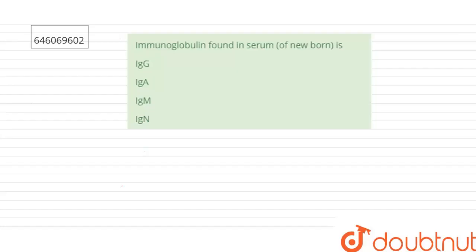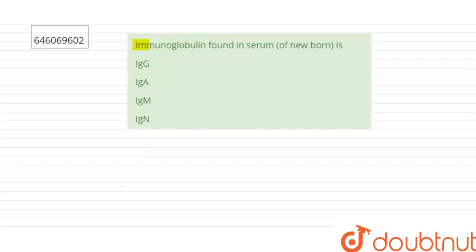The question says that the immunoglobulin found in the serum of a newborn is: immunoglobulin G, immunoglobulin A, immunoglobulin M, or immunoglobulin N.